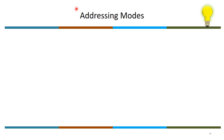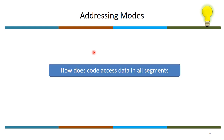Allocation of memory for various segments will have a bearing on code accessing those data segments. When I say data segments, it is the data segment, heap, and stack. How does code access data in all segments?